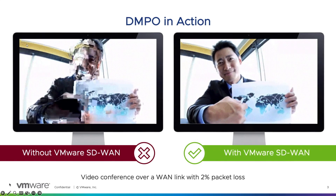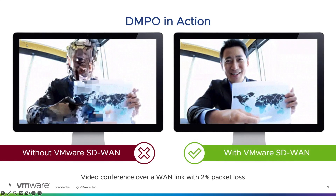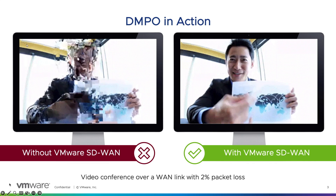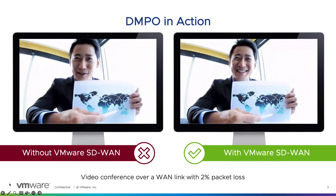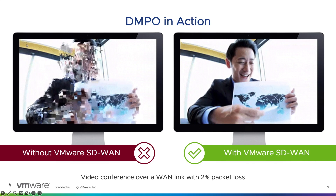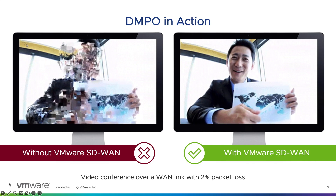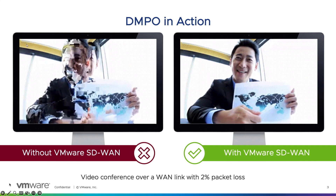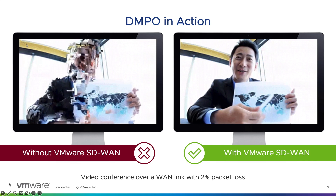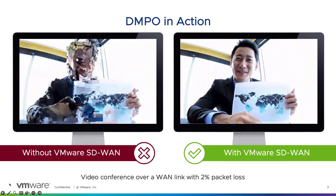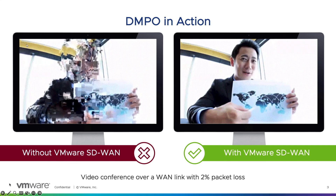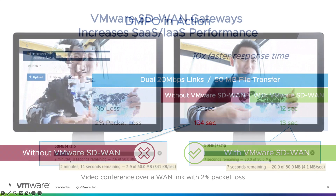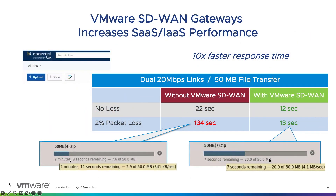Now just to quickly show some of the benefits of DMPO — for example, here we've actually introduced packet loss on the video link, showing how we can correct for that. This also demonstrates both DMPO as well as cloud gateway abilities.